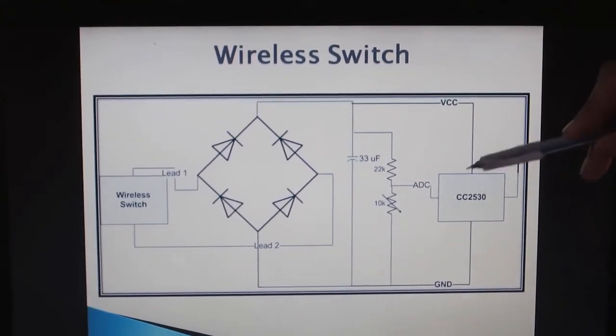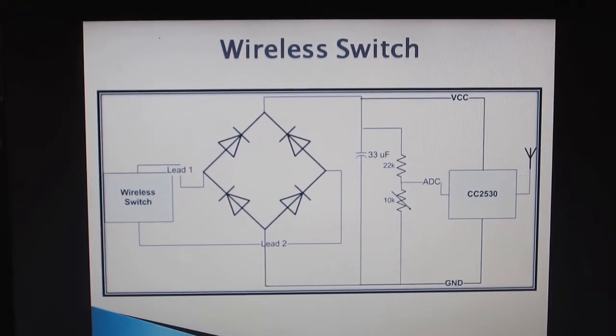The voltage on the potentiometer is sensed by ADC, is encrypted and is transmitted to the receiver.